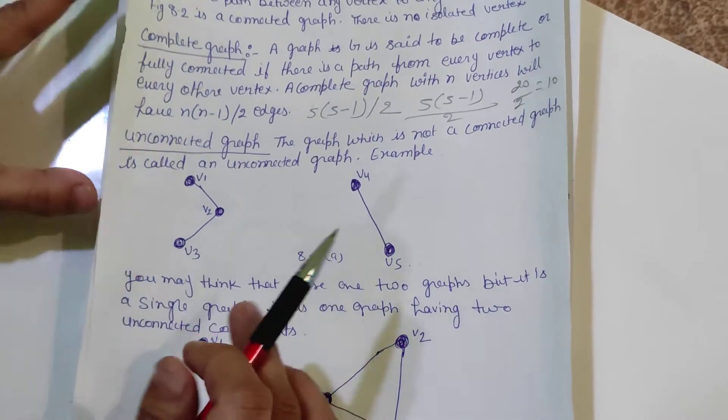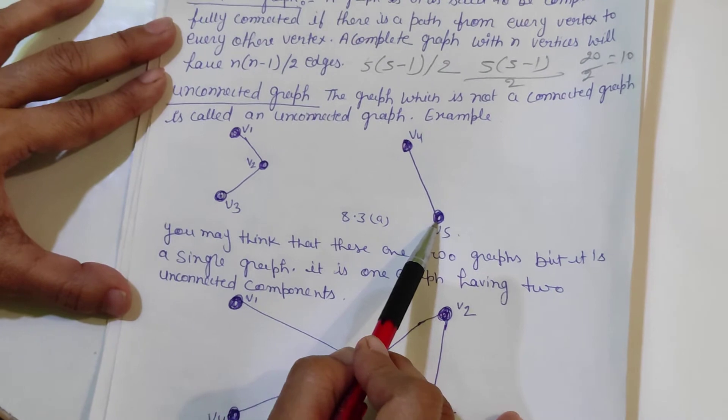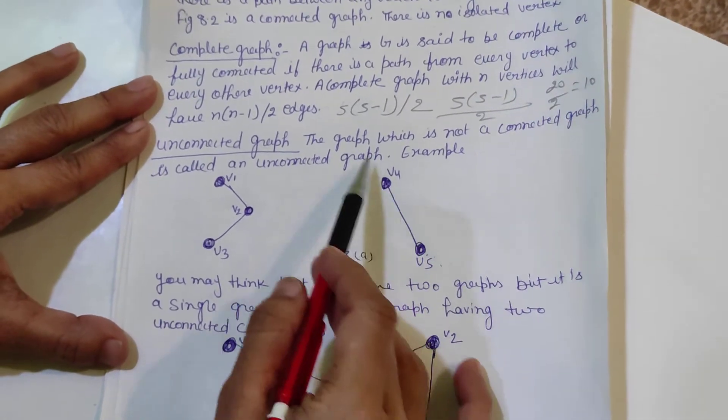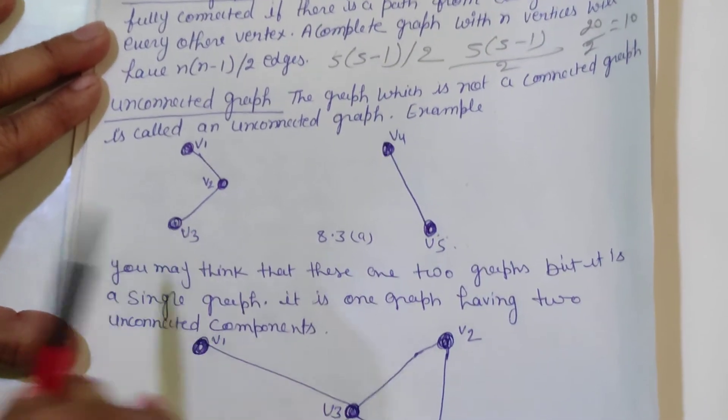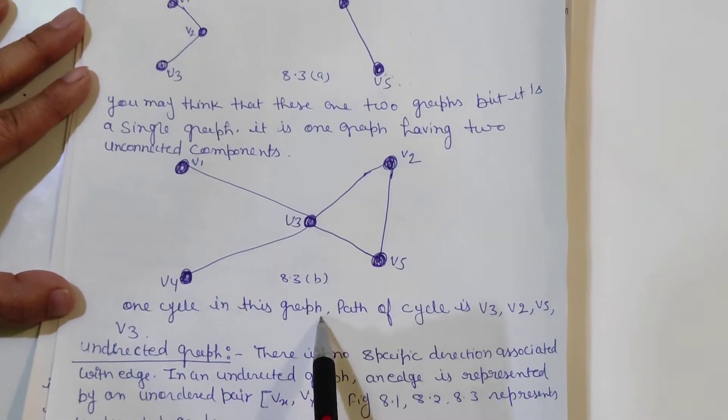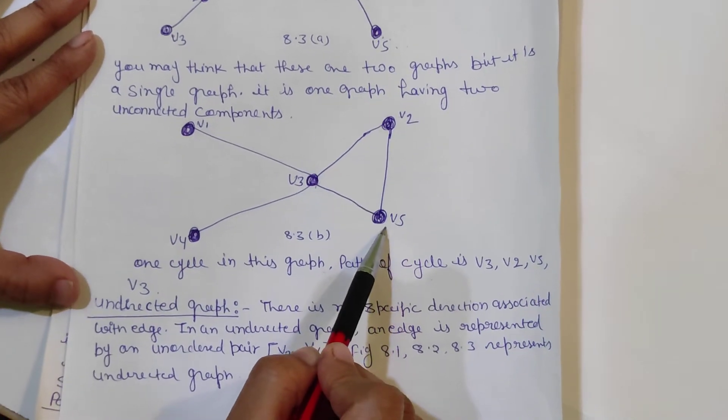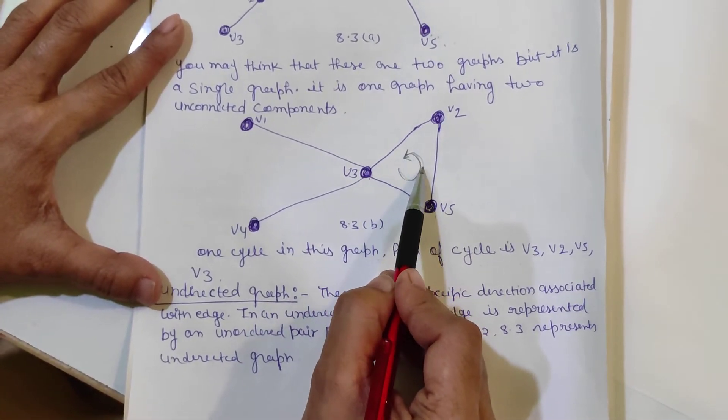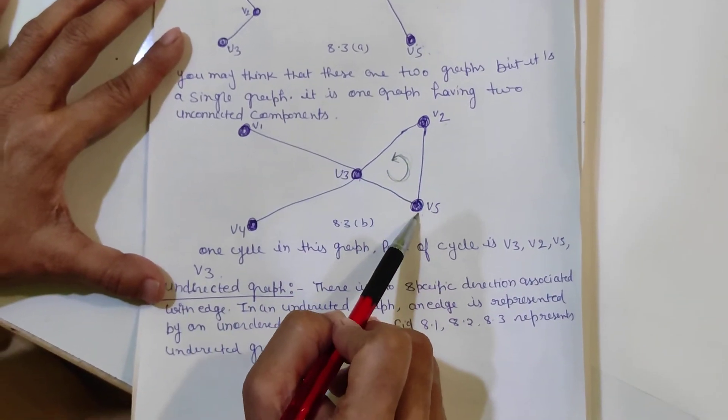Unconnected graph: It is a single graph but it is one graph having two unconnected components. When we have connected them, one cycle in this graph is V3, V2, V5, and this is the cycle. One cycle in this graph is V3, V2, V5 and V3.